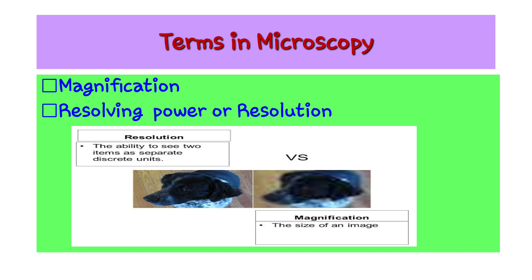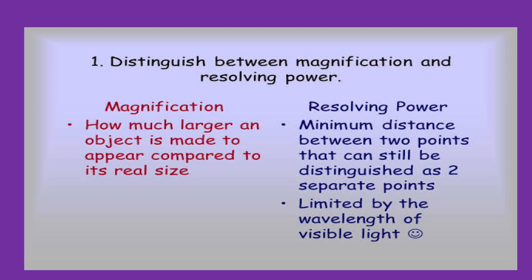There are two main terms in microscopy: magnification and resolving power. Magnification refers to how much larger an object is made to appear compared to its actual size. Resolving power is the minimum distance between two points that can still be distinguished as two separate points, and it is limited by the wavelength of visible light.